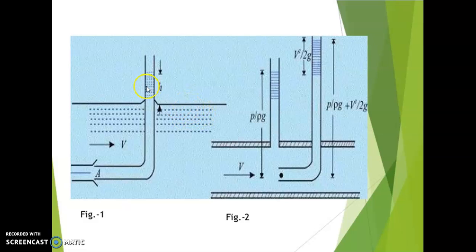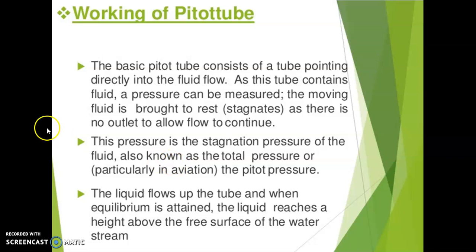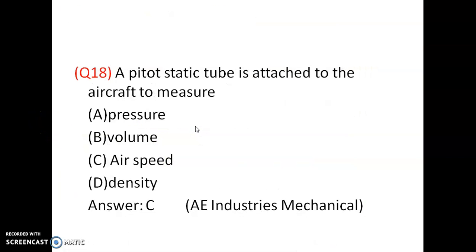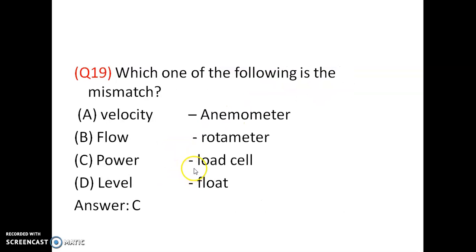Once velocity is determined, you can find discharge using the formula Q = A × V. A Pitot static tube is attached to the aircraft to measure the air speed. Answer C.